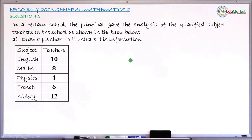This is NECO 2023, question number 5. The question says, that is question number 5e. In a certain school, the principal gave the analysis of the qualified subject teachers in the school as shown in this very table.